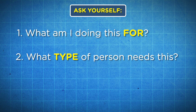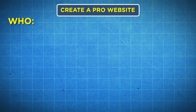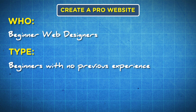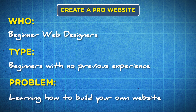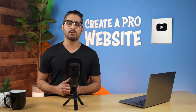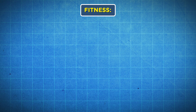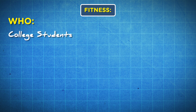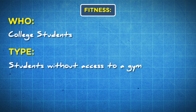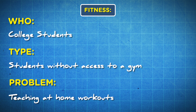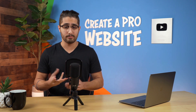The three questions are: what am I doing this for, what type of person needs it, and what problem am I solving? For example, I create websites at Create a Pro Website. Who do I do this for? Beginners — specifically beginners who have no previous experience or classes. What problem am I solving? I'm saving people money from hiring web designers and empowering them to build their own websites. Using a broader example: say you want to build a niche in fitness for college students who don't have gym resources. You teach them to use things around their home for workouts. Just like that, you're a fitness trainer who instructs college students on how to do home workouts.